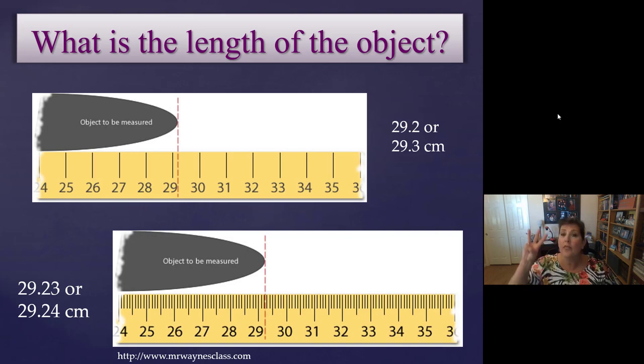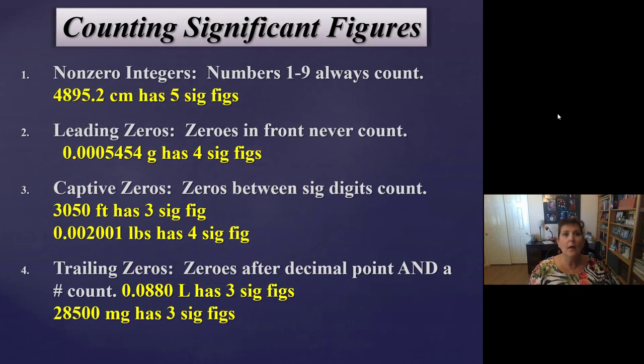Now, in the top ruler, we got three sig figs, 292, three sig figs. With the bottom ruler, we get four sig figs, 2923, four sig figs. So when I give you a measurement, how do you know how many sig figs are in it? So we have four rules. Number one, if it's a 1, 2, 3, 4, 5, 6, 7, 8, or 9, it counts. It is significant. It's a measurement number. Example, 4,895.2. All of those are numbers. So it has five sig figs.